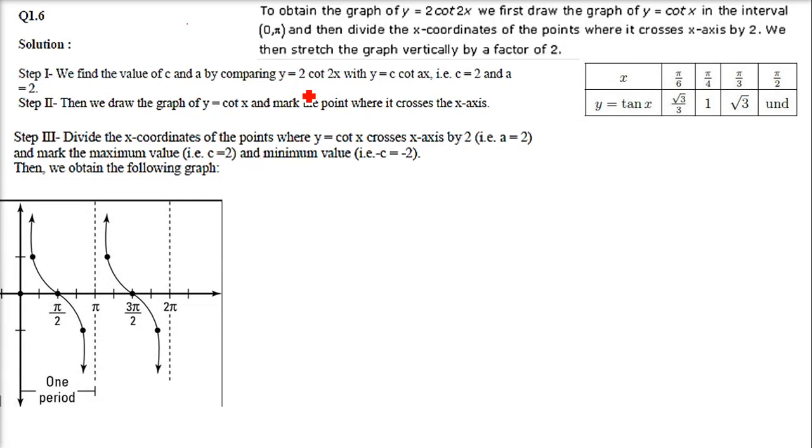Coming to y equals 2 cot 2x. Now when we compare y equals c cot ax, what do we get? We get c equal to 2. So in this tan and cot, it will be just stretching, twice of stretching. And you will see when I make the graph.